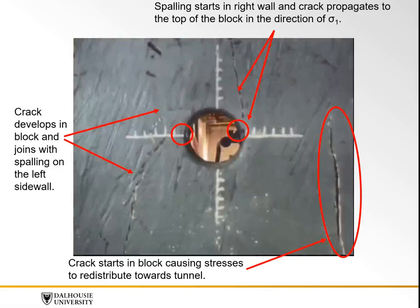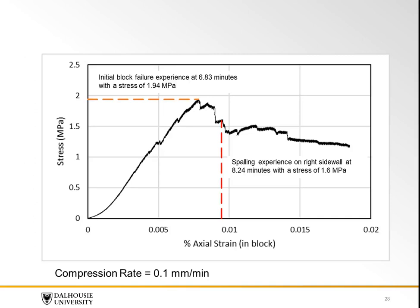From the test, a stress-strain curve was developed and two interesting points were found. First, the block failed at a lower stress than the UCS, which may have been a result of the curing time or the levelness of the top and bottom of the block. Secondly, spalling was experienced at a reading of 1.6 MPa. At this vertical stress, a maximum tangential stress of almost 5 MPa would exist, which seems unusually high compared to the spalling observed in the test block.